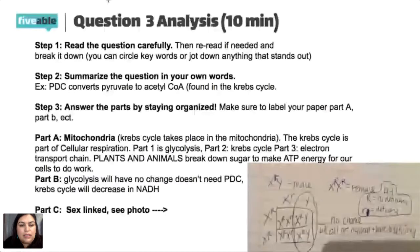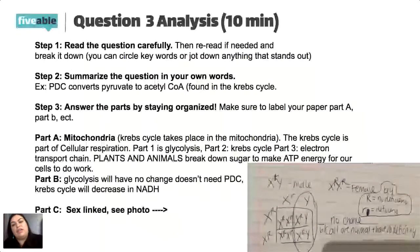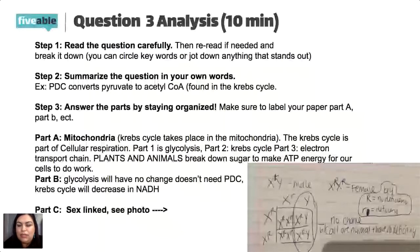Question A asks us to identify the cellular location where PDC is most active. PDC catalyzes the conversion of pyruvate to acetyl-CoA, which is a substrate from the Krebs cycle. So we need to ask: where is the Krebs cycle taking place? In which organelle? The Krebs cycle takes place in the mitochondria. The Krebs cycle is part of the process of cellular respiration: first glycolysis breaks down sugars, then the Krebs cycle, and finally the electron transport chain where ATP synthase works to make ATP. The answer is the mitochondria, or more specifically the mitochondrial matrix.